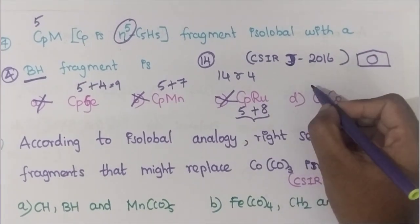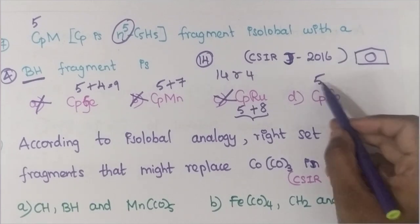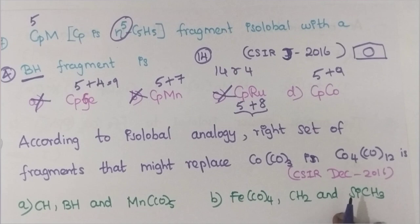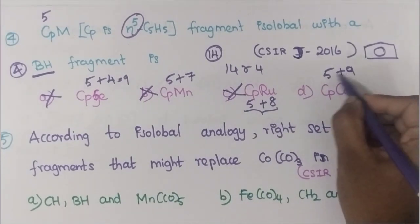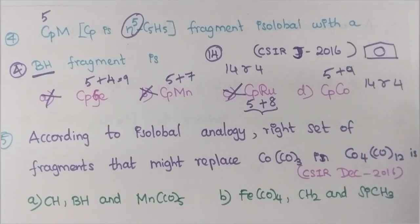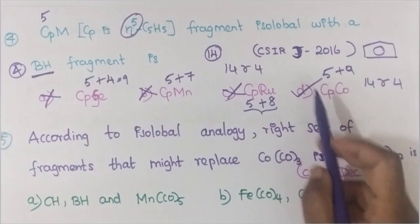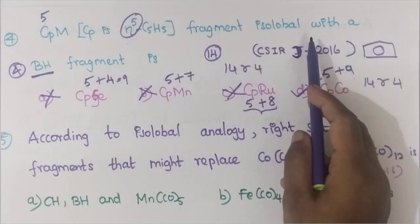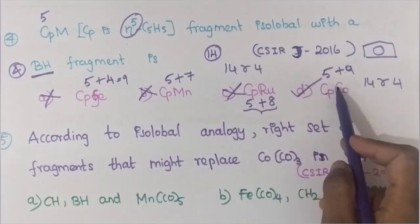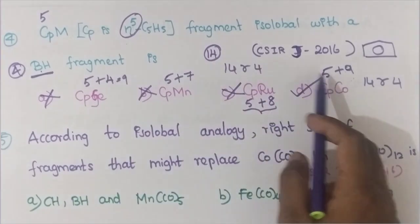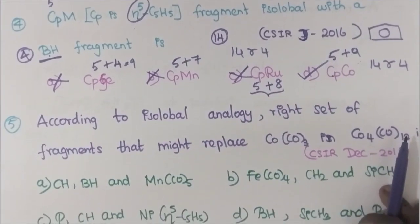For option D: CpCo — cobalt has 9 valence electrons. So Cp(5)+Co(9)=14 electrons. Since 14 is isolobal with 4, CpCo is isolobal with BH. Therefore option D is the correct answer.